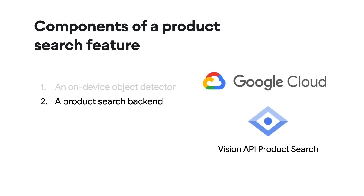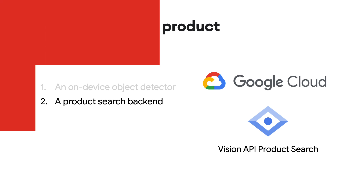The second component is a product search backend. Because your product catalog can be big, we should keep it on the server. We'll send to the backend only the part of the image containing the product that the user wants to search for, then receive the product search result and show it to the user. We'll see how we can build a product search backend using Vision API product search, a product in Google Cloud.